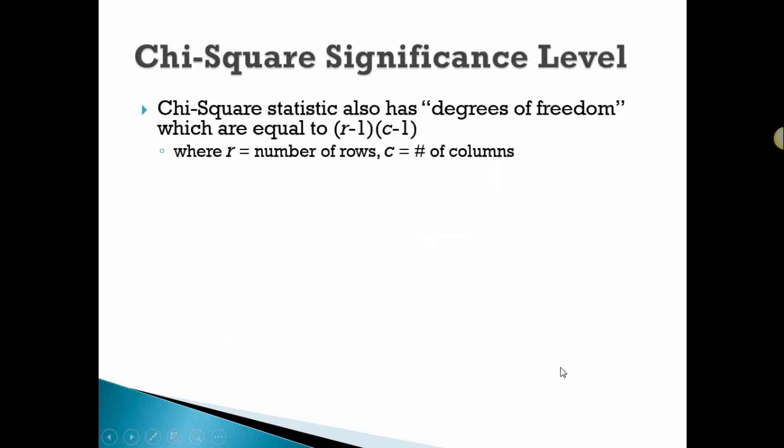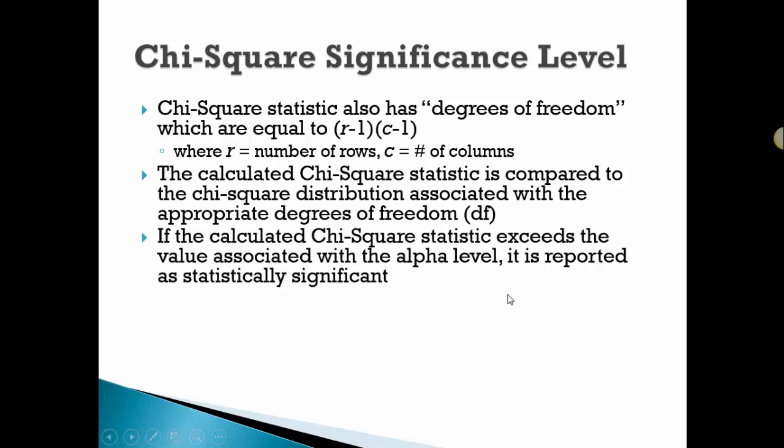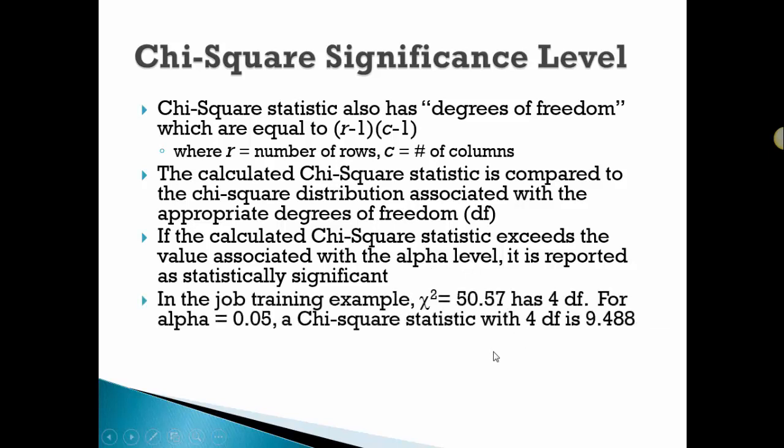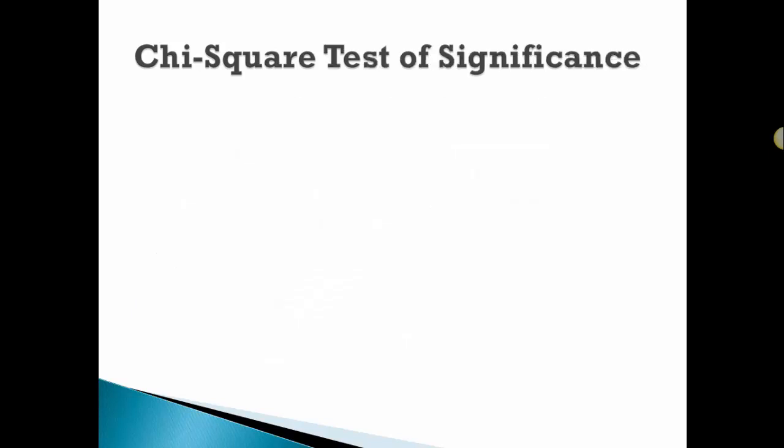There are degrees of freedom associated with a chi-square statistic, and they're equal to the number of rows minus one times the number of columns minus one. The calculated chi-square is then compared to a tabled value based on the degrees of freedom. If the chi-square that we calculated exceeds the tabled value associated with the alpha level, we report it as statistically significant. In the job training program, it was a three-by-three table, so it has four degrees of freedom. From the table for chi-square, we see four degrees of freedom. The critical value for a p-value of 0.05 is 9.488. Ours is much larger than that, so therefore the p-value is less than 0.001, and we say that it has statistical significance. We reject the null. There is some kind of relationship between job training and employment status.